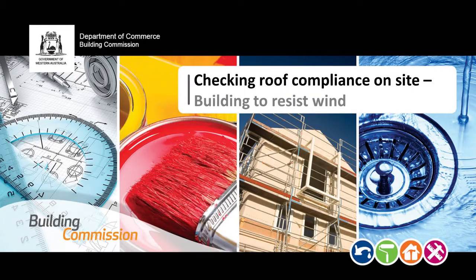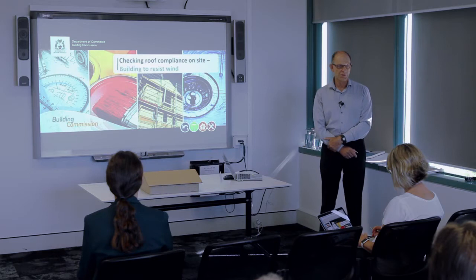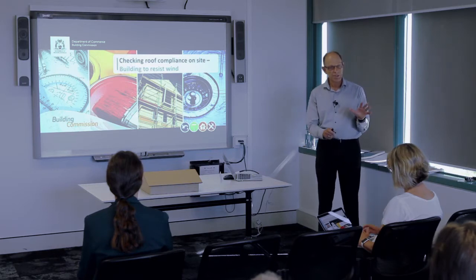Today we're going to be focusing on houses and in particular checking roof compliance. By compliance, what we're talking about is complying with the National Construction Code and any deemed-to-satisfy requirements, any engineer's details that might be used as an alternative solution, and manufacturer's details that also comply with referenced Australian standards.